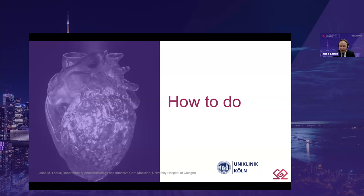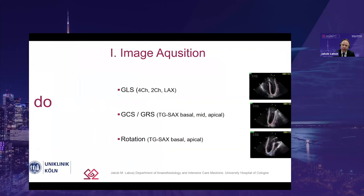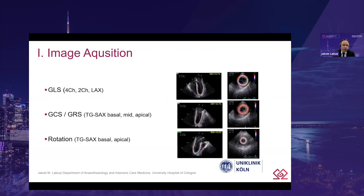To perform strain analysis, you first need to acquire the software, which depends on the manufacturer of the echo machine, and these applications often need to be installed separately. Be aware that values generated from different software solutions are not interchangeable — they are similar, but not the same. Next, you need the required loops. For global longitudinal strain, these are the mid-esophageal four-chamber, two-chamber, and long-axis views. For circumferential and radial strain, these are the transgastric short-axis views, which can also be used for evaluation of left ventricle rotation. The different loops need almost the same heart rate and configuration of the left ventricle. High-quality images without major artifacts and rhythm disturbances are required, along with high frame rates — usually above 40 frames per second.